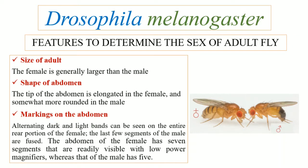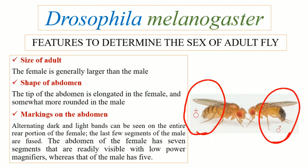Talking about the markings on the abdomen. The female fruit fly Drosophila melanogaster contains alternate light and dark bands on the abdomen, as you can see in this figure. The female contains alternating light and dark bands, whereas the last few abdominal segments of the male are fused and are dark colored, as you can see in this figure.